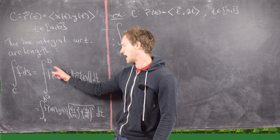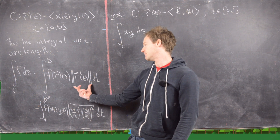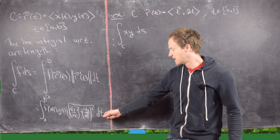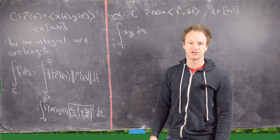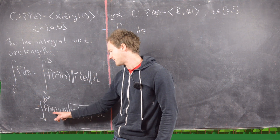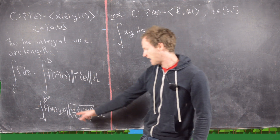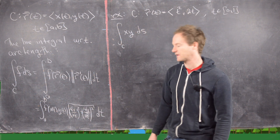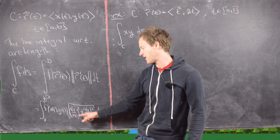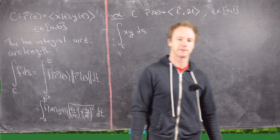It's the integral from A to B of F evaluated at R of T, times the magnitude of R prime of T, DT. Or in terms of parametric equations, it's the integral from A to B of F evaluated at X(T), Y(T), times the differential arc length component: the square root of (dX/dT)² plus (dY/dT)².